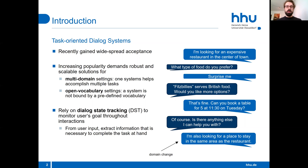This talk is about a particular component of dialogue systems: the dialogue state tracker. Systems rely on dialogue state tracking to monitor the goals of the user throughout the course of a dialogue. To fulfill a user goal, the dialogue system must extract relevant information from the user input and track this information during conversation.